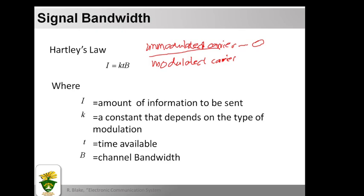Hartley's law is a general rule that relates bandwidth and information capacity. It states that the amount of information that can be transmitted in a given time is proportional to the bandwidth for the modulation scheme. The formula is: I = k × t × B, where I is the amount of information, k is a constant depending on the type of modulation, t is the time available, and B is the channel bandwidth.